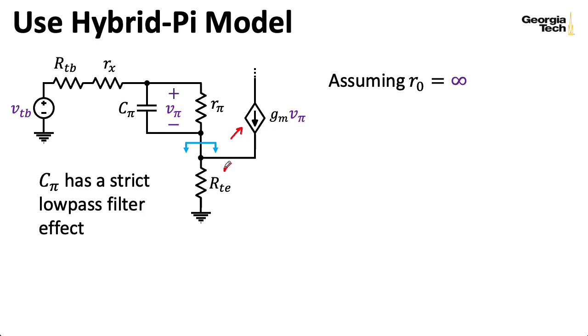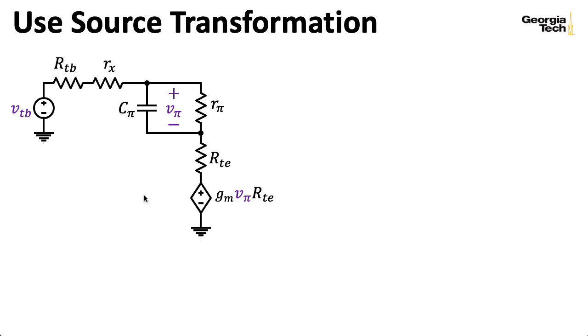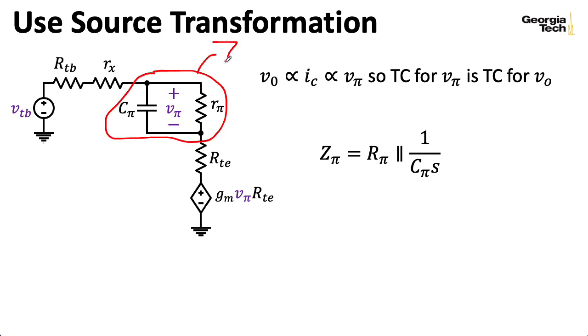So this current source in parallel with this resistance will look like this resistance in series with a voltage source where you just take this current and multiply it by the resistance here. And doing that results in a circuit that looks like this. So here's the general idea. Remember, we're looking for time constants. We're assuming that the output voltage has the form of a low-pass filter function times some constant. And when we're trying to find the time constant, whatever the big constant in front is doesn't really matter. Now, we know that output voltage is proportional to the collector current. Remember, we're using the R0 equals infinity approximation for this particular analysis. And that collector current is proportional to Vpi. So if I can find a time constant for Vpi, that's going to be the same time constant for V0.